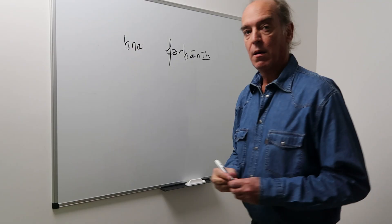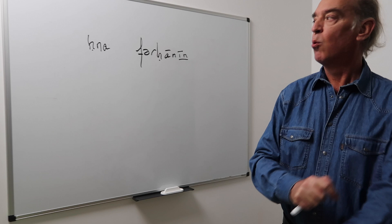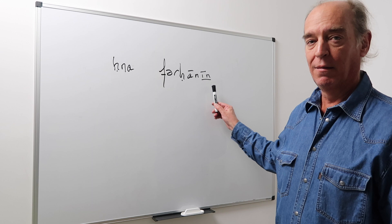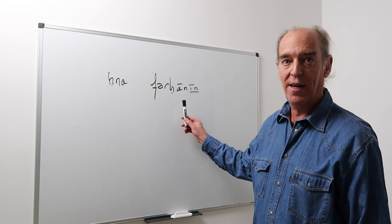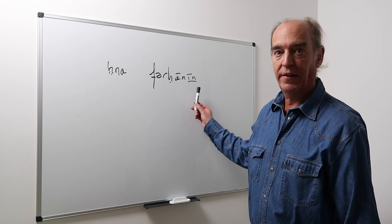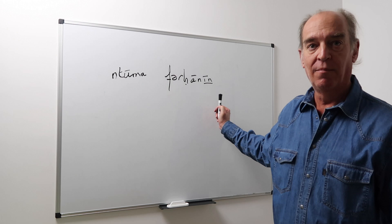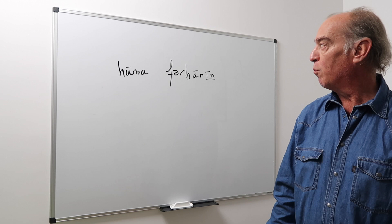Now let's move to the plural. In order to say 'we are happy,' we have to use the form Ahna, which is 'we,' with ferhaanin — that is the plural of ferhaan. Ahna ferhaanin. The same for Ntuma — 'you' plural — Ntuma ferhaanin. And finally Huma ferhaanin — 'they are happy.'